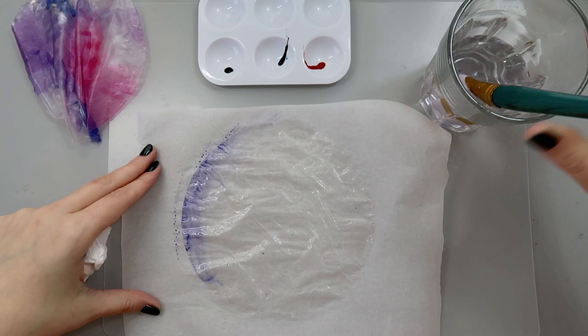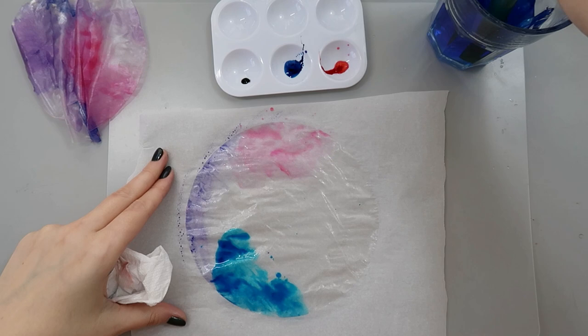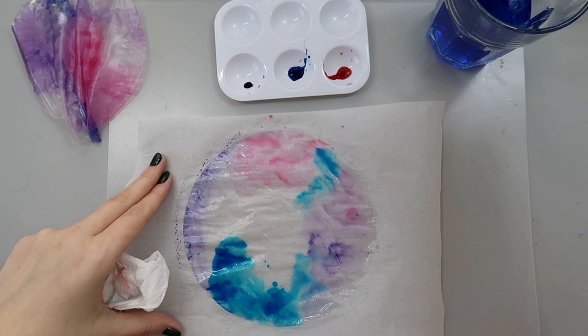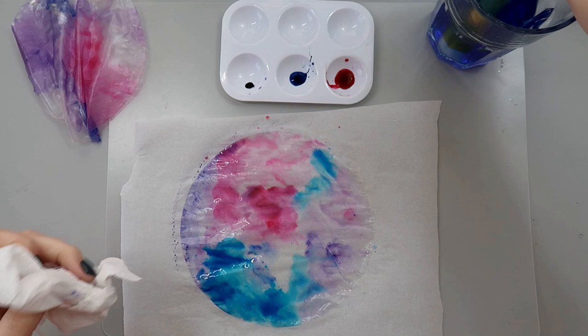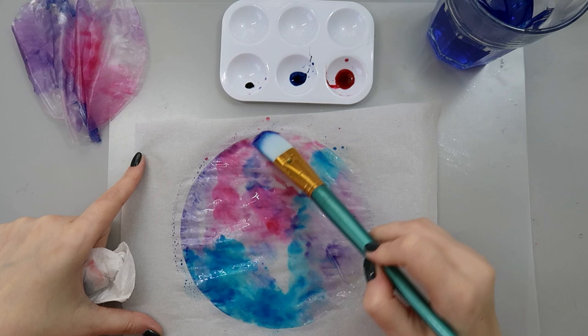Dip it in this color and apply here to my rice paper. I'm making sure that I have enough water on my brush and on my rice paper so this color will bleed into each other and create this watercolor effect, something like this.